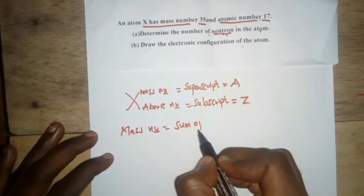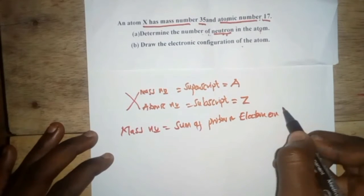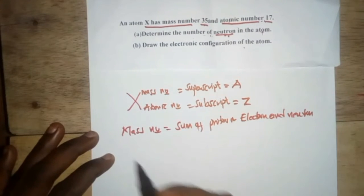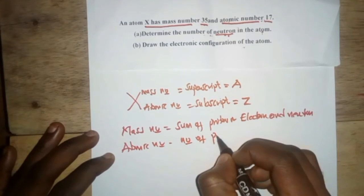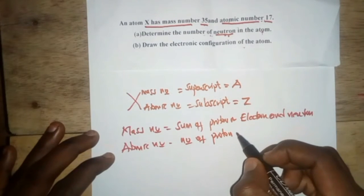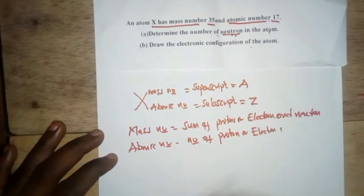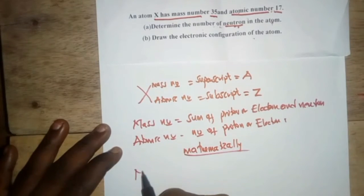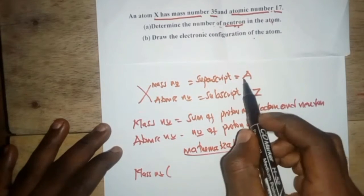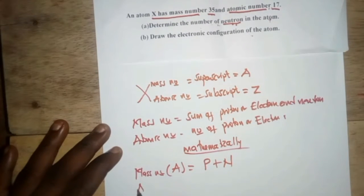The atomic number — the subscript — is represented by the letter Z. The mass number is the sum of protons and neutrons in the nucleus of the atom. The atomic number is the number of protons, which equals the number of electrons. Mathematically, the mass number A equals the number of protons plus the number of neutrons.